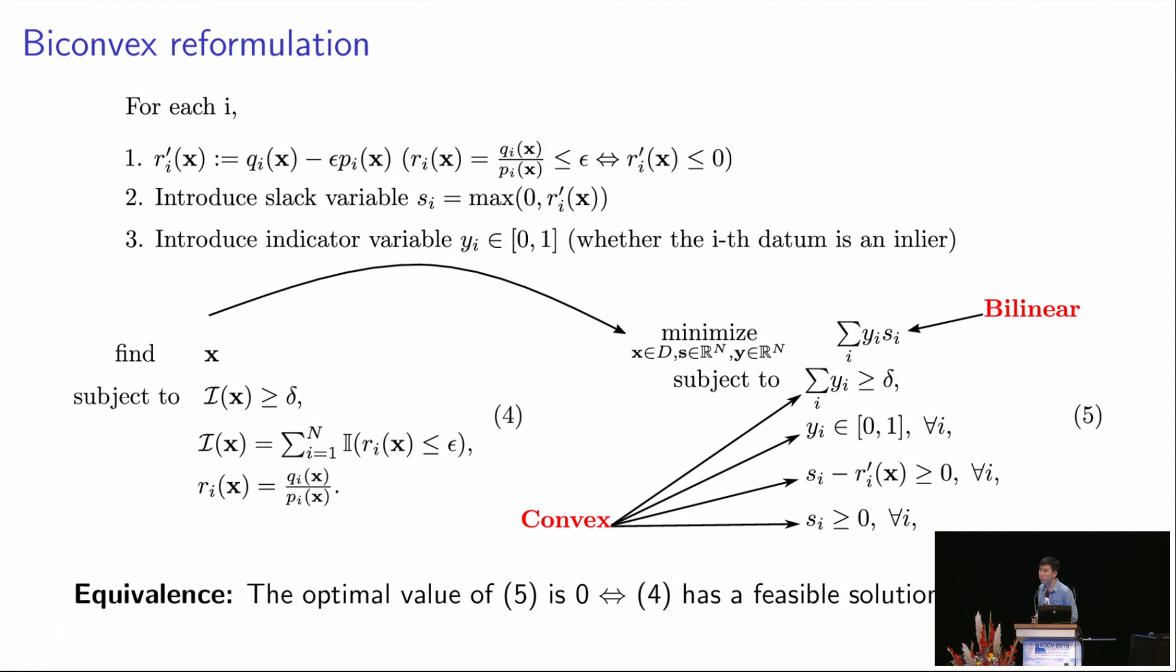The major contribution of this work is that we found a biconvex reformulation, which is exactly equivalent to the original update problem. In this reformulation, we have a bilinear objective function and a convex domain. The equivalence between the reformulation and the original update problem is that the objective function of this reformulation is lower bounded by zero. We can prove that if the optimal value of this reformulation is zero, then the update problem must have a feasible solution. Otherwise, the update problem does not have a feasible solution. The advantage is clear. Now we can use standard biconvex optimization approach to solve this reformulation, so that we can efficiently solve for each update problem.